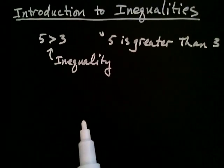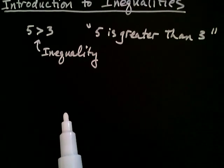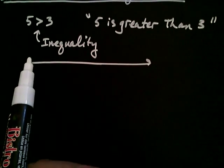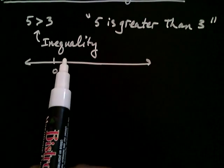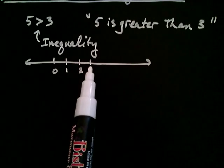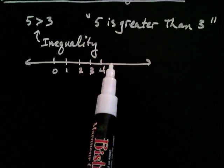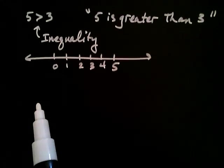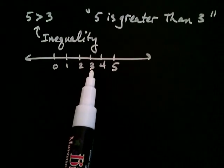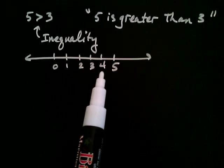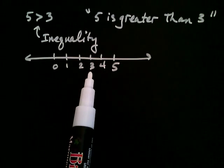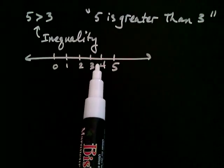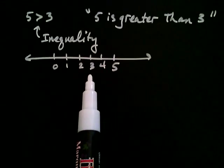We often represent that relationship on a number line. So we draw a number line: zero, one, two, three, four, and five. We know five is larger than three, but on a number line, the way that shows up is that five is to the right of three. So whenever we see five greater than three, we know that implies five is to the right of three on the number line.